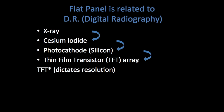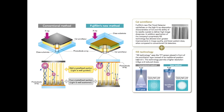Next, a photo cathode converts that light to electrons, and then the thin film transistor (TFT) array records the signal. For flat panel detectors, the TFT is the limiting factor that dictates resolution. In the conventional method, an x-ray enters the system, hits the cesium iodide scintillator shown in yellow, which converts it to light. That light is then converted to electrons and recorded into a TFT array shown in orange.